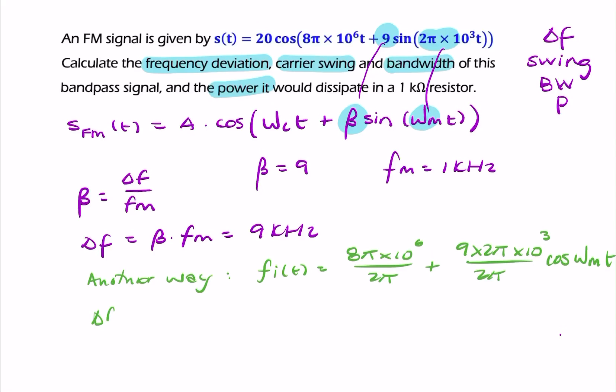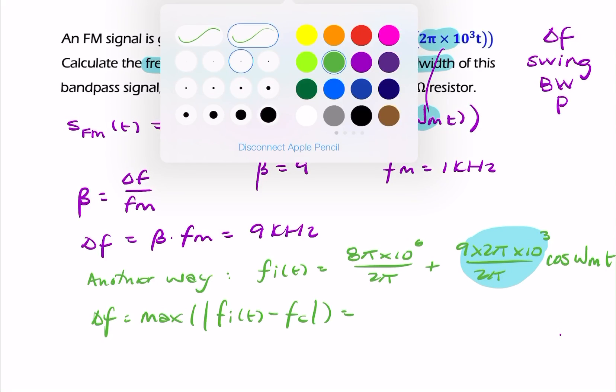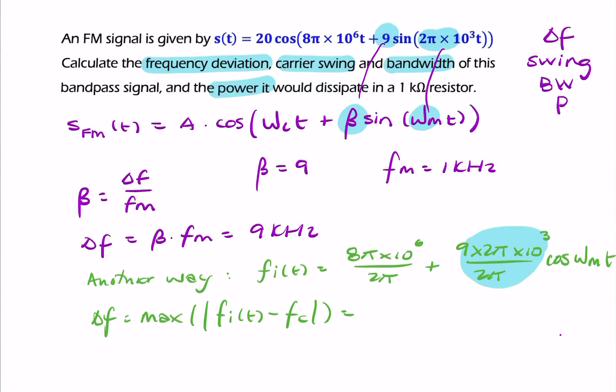Delta f is the maximum of the absolute value of the instantaneous frequency minus the carrier frequency. So that will give me essentially just this, because we're talking about the maximum value, so that's when this is equal to 1.